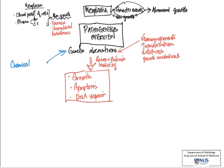What are some of the inciting causes of genetic aberrations? These include chemicals, for example, chemical carcinogens seen in tobacco and cigarette smoke.